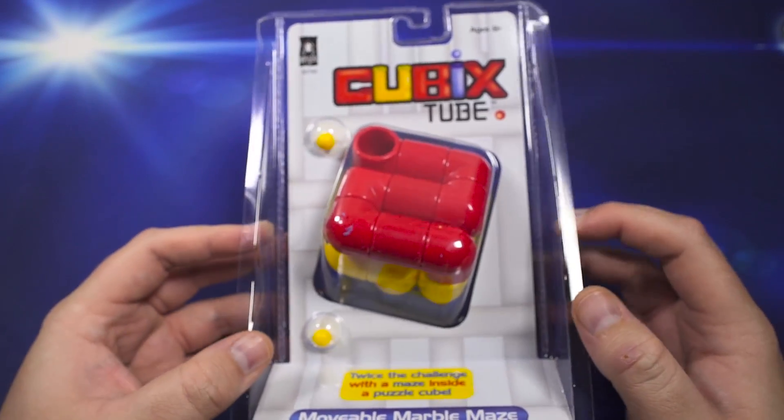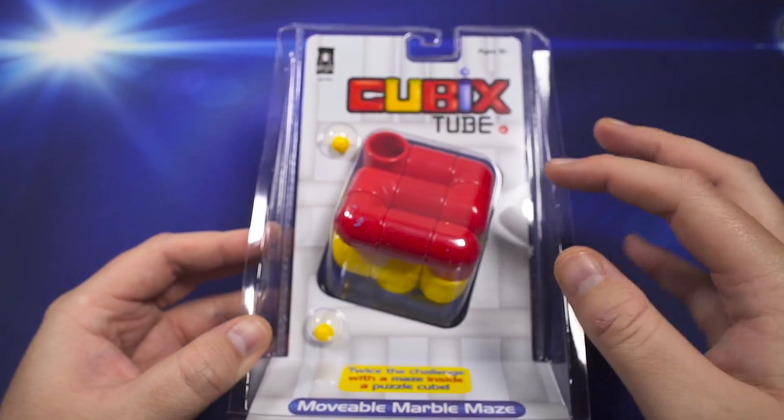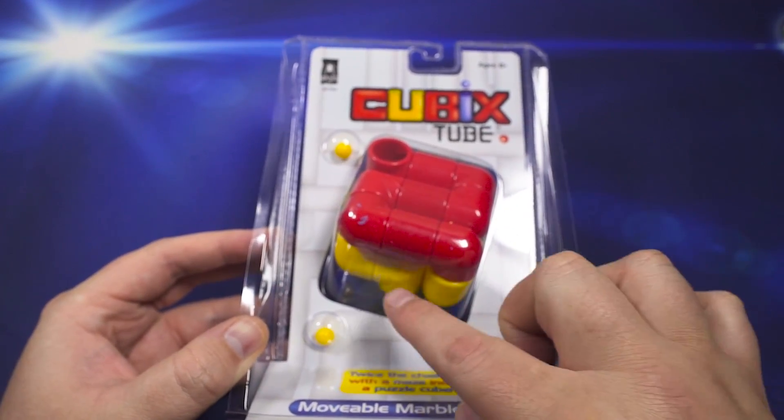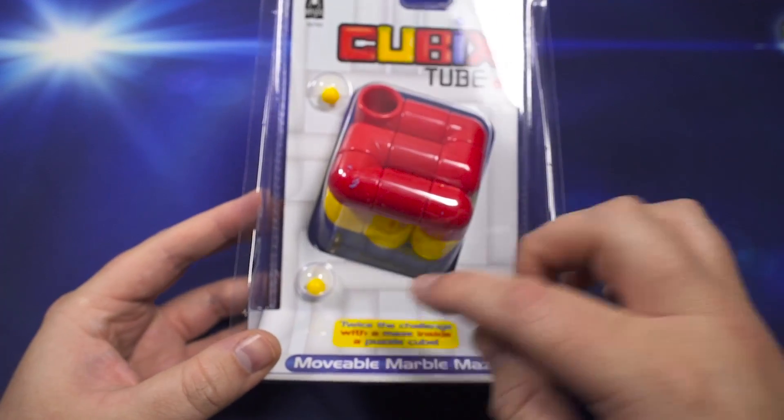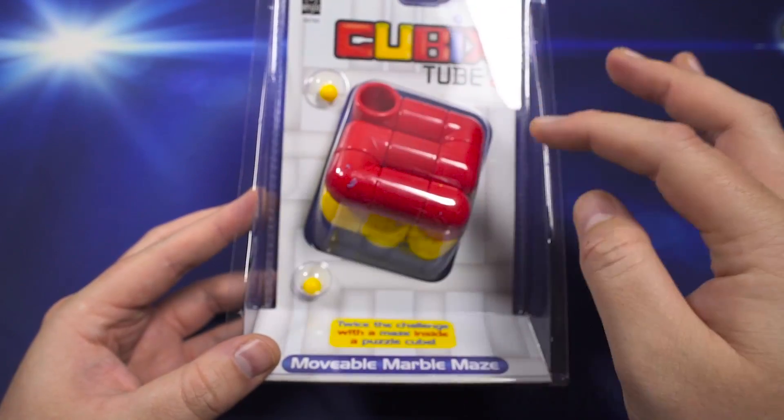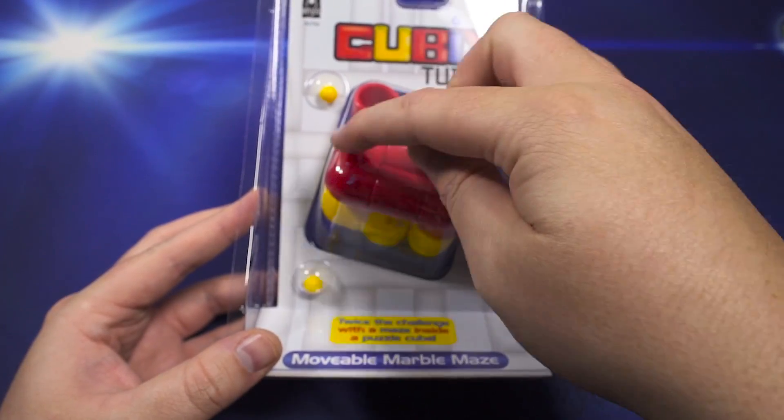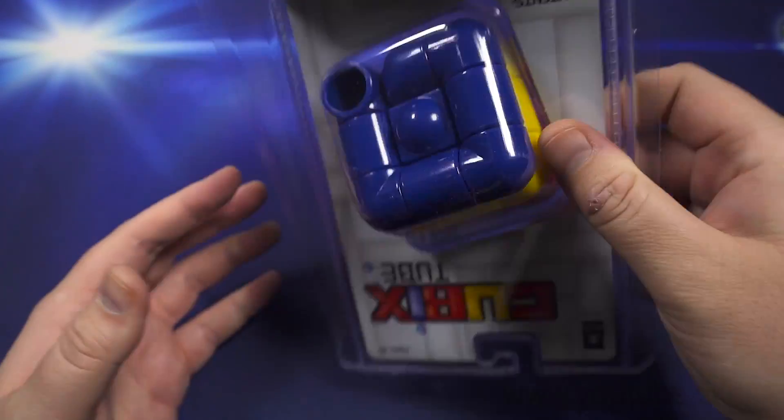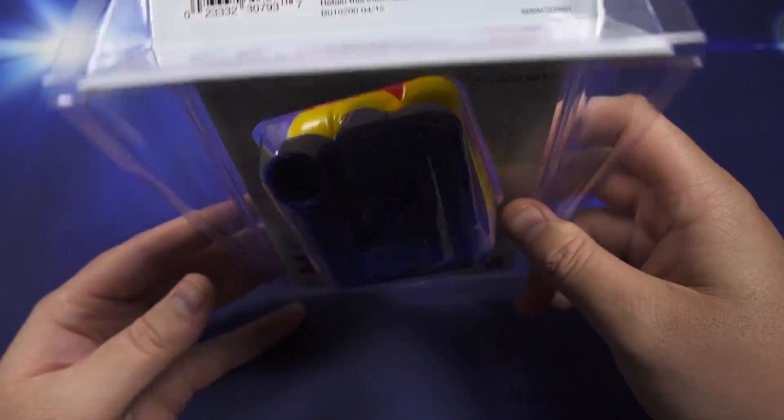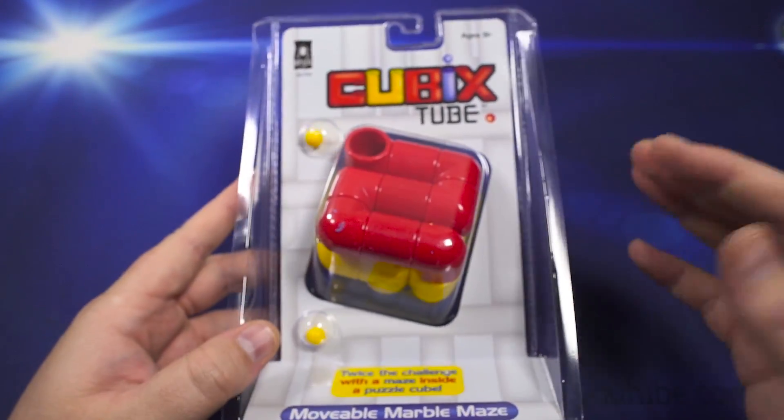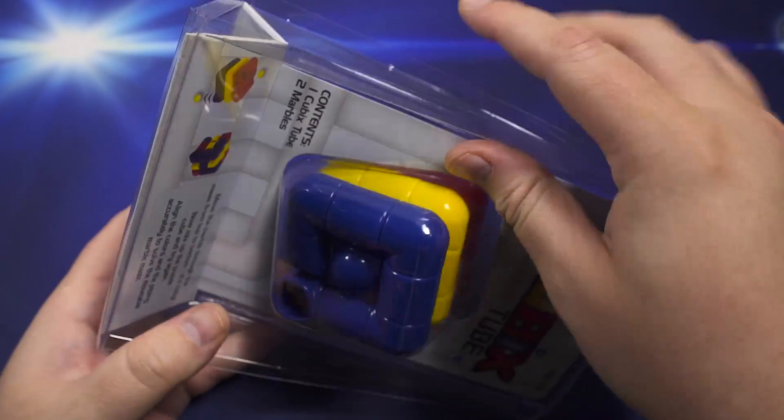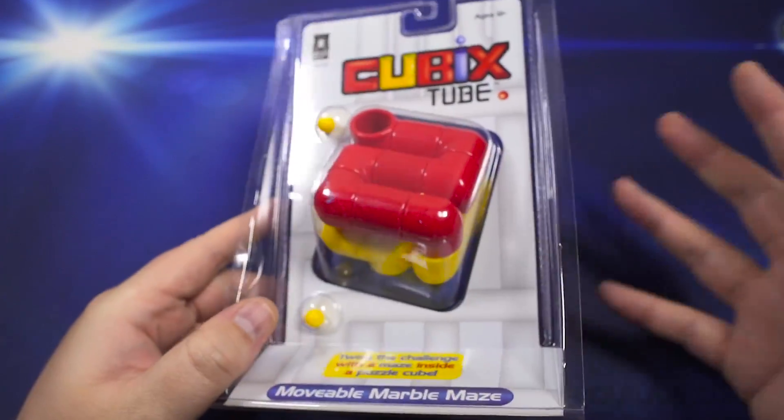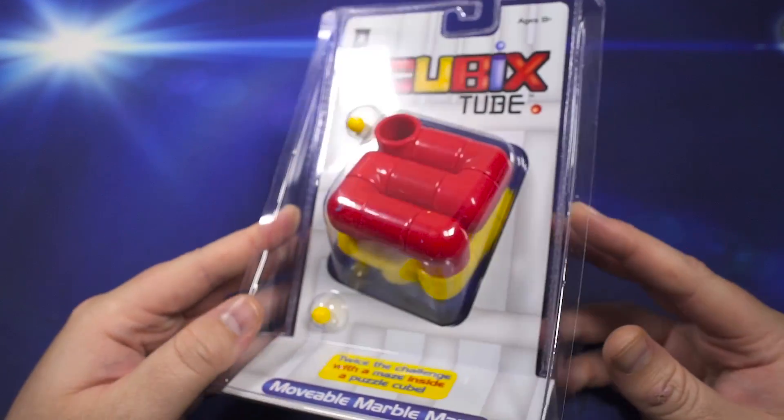If you guys aren't familiar with this puzzle, it's basically a three by three. It solves like a three by three, but the colors go by layers as you can see there. It comes with these two little plastic balls that you put in here, and if it goes all the way through the puzzle to the other side, that means it's solved. It might have a couple different solved states, like if you replace this piece with this piece.